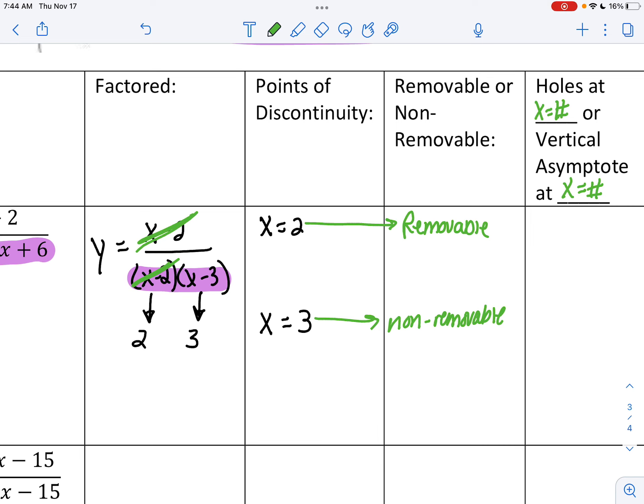Now, if they're removable, they're just holes. So this one would be a hole. That is correct. But if they're non-removable, they would be a vertical asymptote. So I would write vertical asymptote at x equals 3. So if you were graphing it and you got to x equals 3, there would be a vertical asymptote. The graph would approach, and when you get to x equals 2, there would be a hole in the graph.